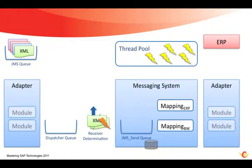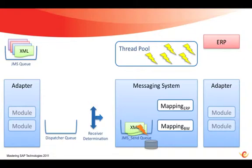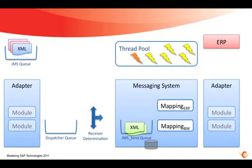The thread will then duplicate the message and write both copies into the messaging system queue. Before it returns to the JMS queue, it marks that message as confirmed and returns to the thread pool, where it is now available to pick up any other messages.